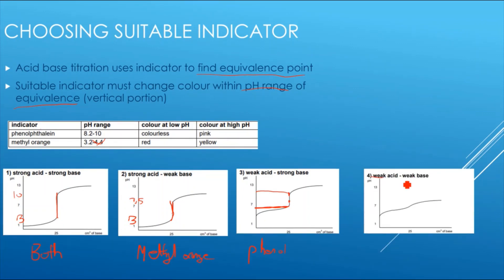For a weak acid and weak base titration, there is no distinct vertical section on the pH curve. This means neither phenolphthalein nor methyl orange — nor any standard indicator — can be used reliably. Instead, you would use a pH meter or pH probe to find the neutralization point.